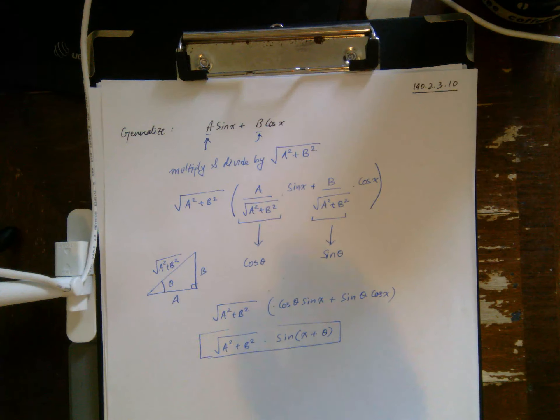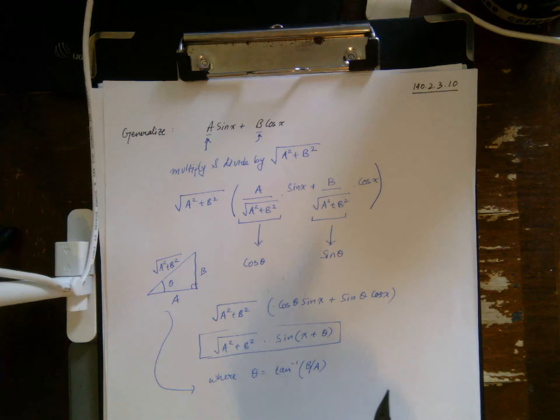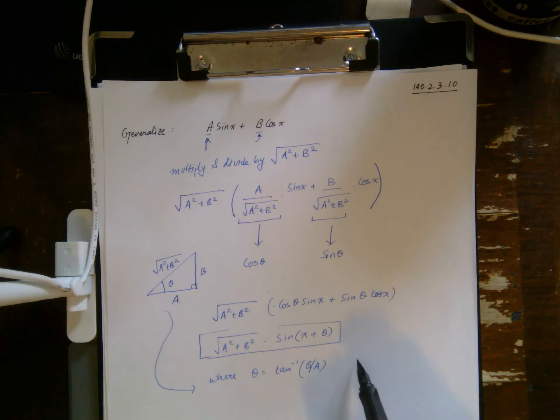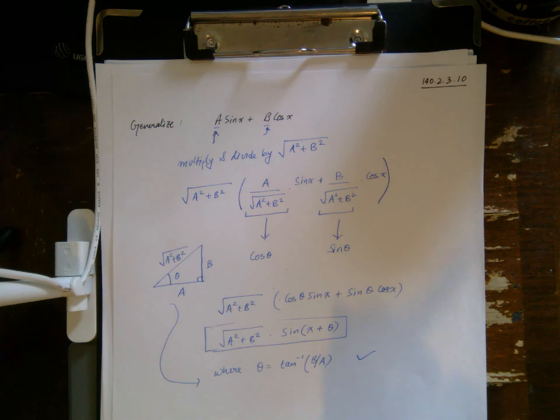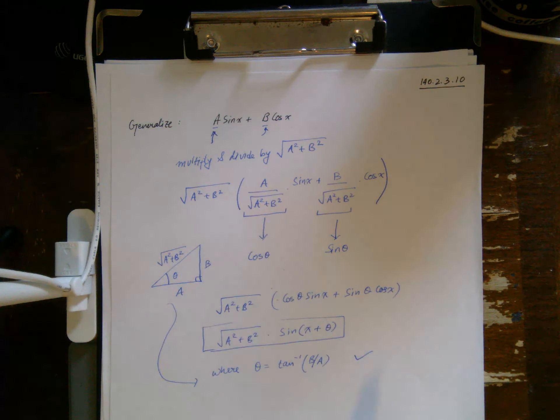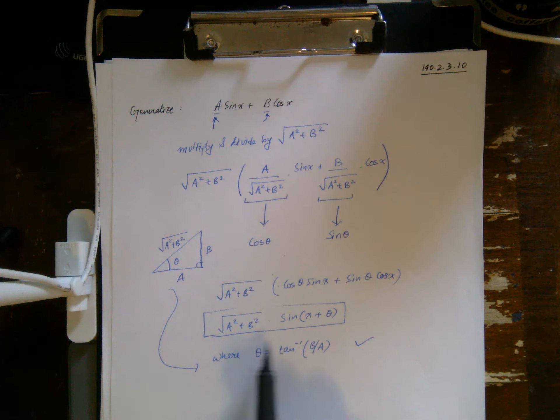Where what is theta? You can say theta is tan inverse of b over a from this triangle. So that kind of works out. So this gives you a general method of converting a linear combination of sine and cosine into one single function.